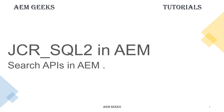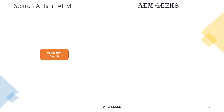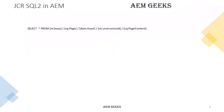In this tutorial, I talk about JCR SQL2 in AEM. You can find a search query using either Query Builder, which I have already explained in previous tutorials, or JCR SQL2. It is not recommended to use JCR SQL2 because of some performance reasons, but still in some cases you have to write SQL2. You must know how to write SQL2 queries and how to execute them in AEM. If you have already worked with SQL, you will feel familiar with the syntax of SQL2.